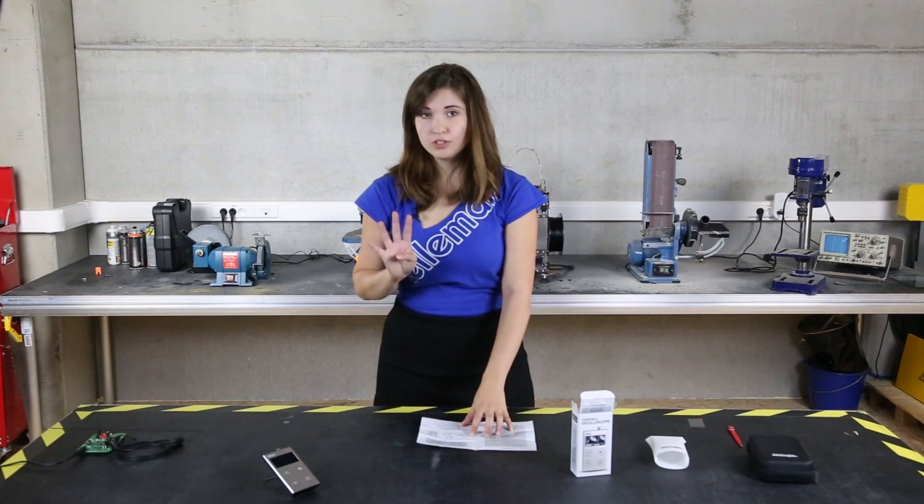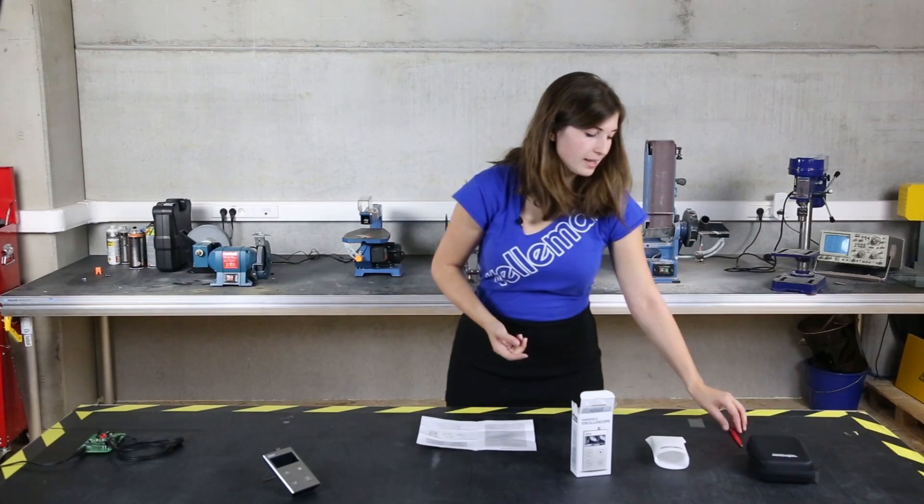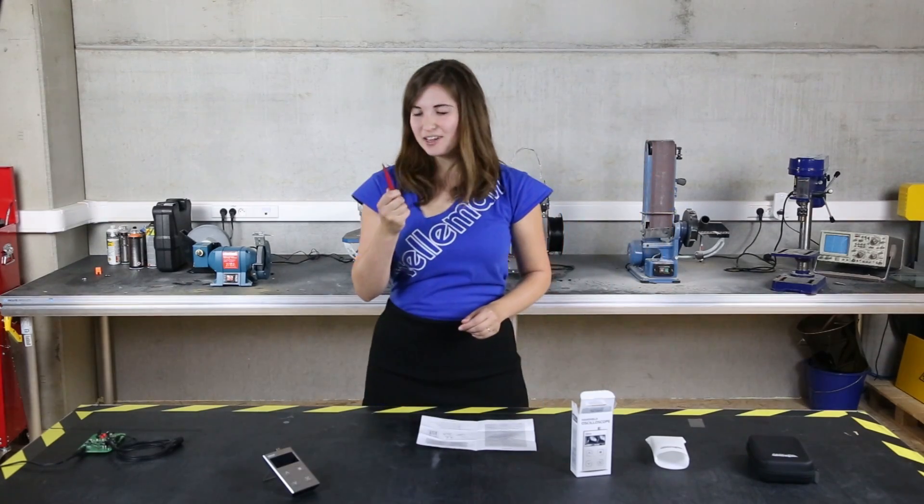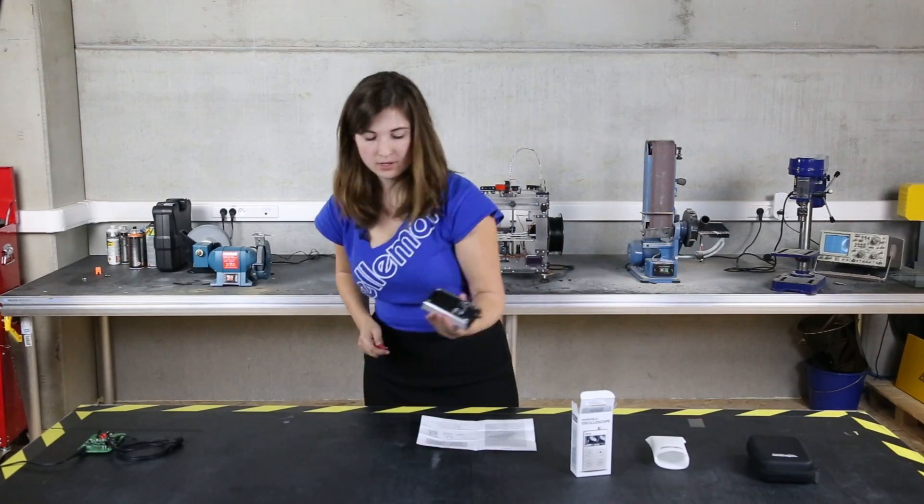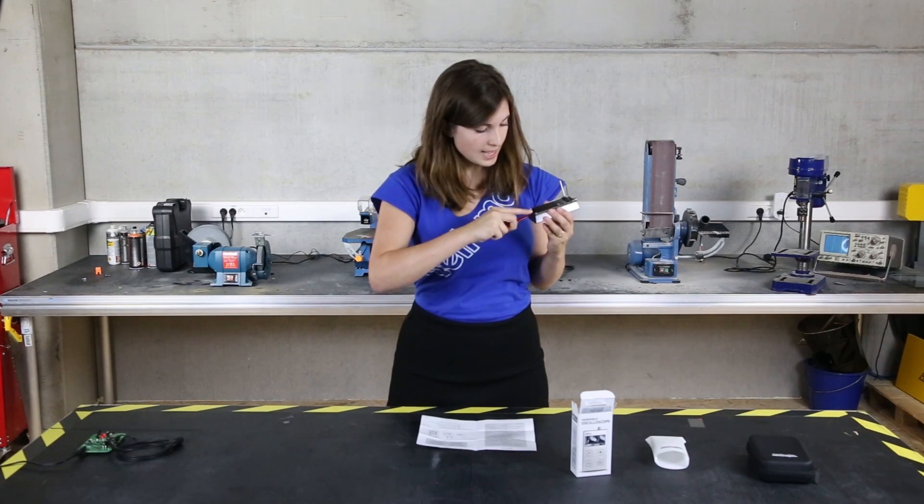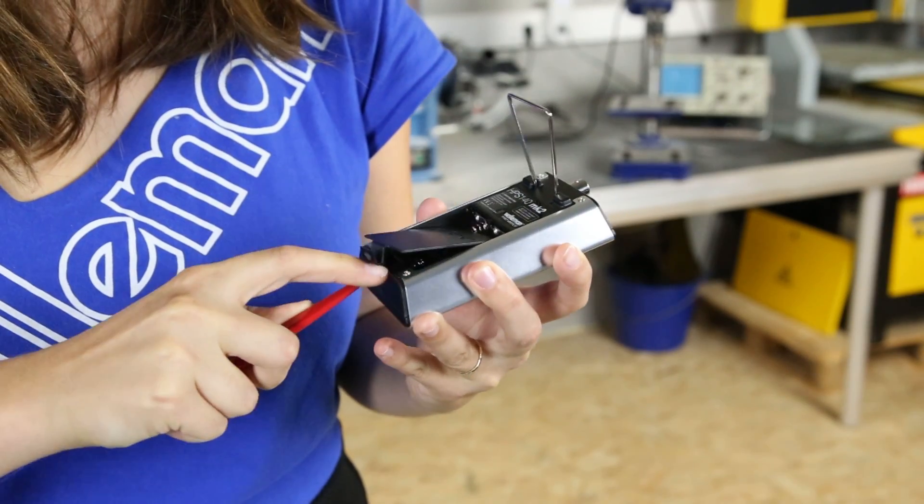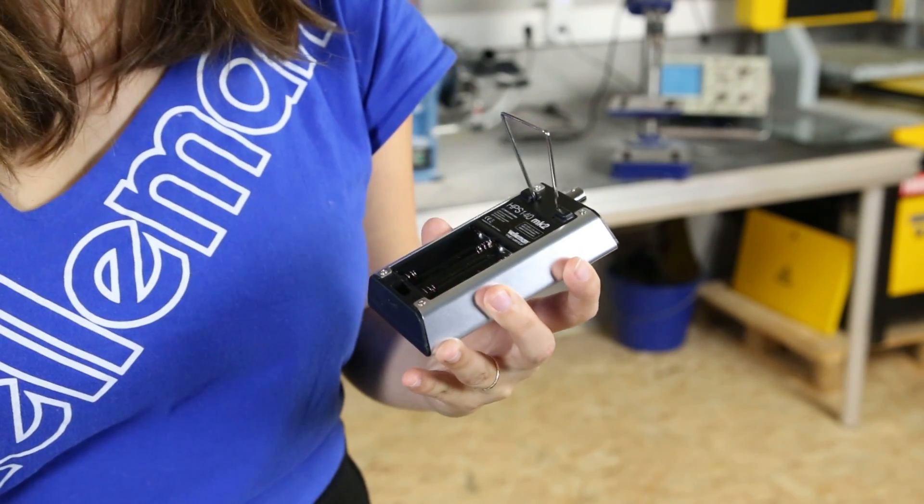Now to power up the scope you'll need four AAA batteries and to open the back you'll need something like a flat screwdriver. You'll have to insert it in the back, push lightly until the back opens up, and then insert the batteries.